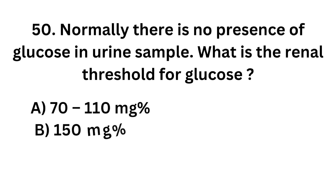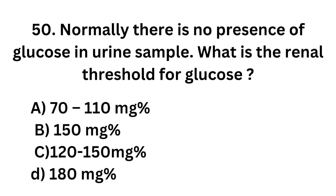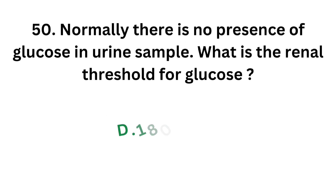Question number 50. Normally there is no presence of glucose in urine sample. What is the renal threshold for glucose? Option A - 70 to 110 mg percent; Option B - 150 mg percent; Option C - 120 to 150 mg percent; Option D - 180 mg percent. The correct answer is Option D, 180 mg percent. The normal renal threshold for glucose is 180 mg percent.